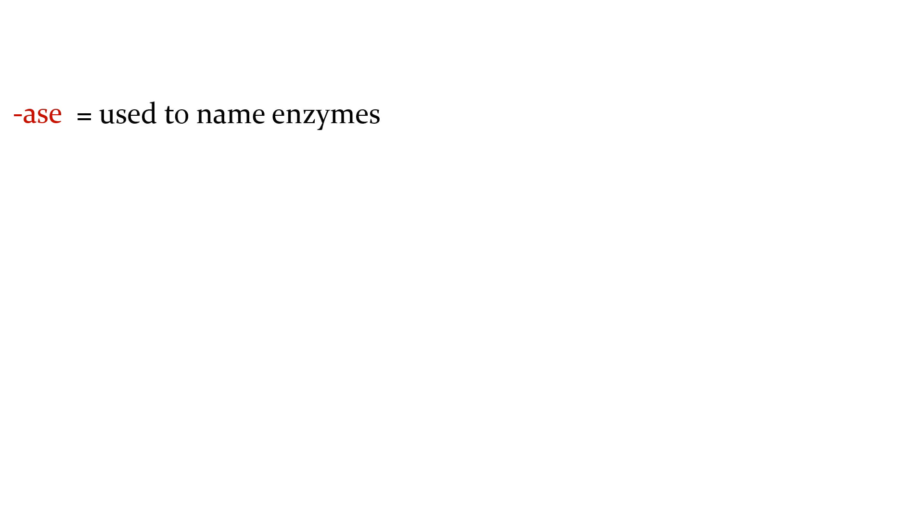Our next one is -ase, and this is used to name enzymes. This is a Greek suffix. We have lactase, maltase, lipase, amylase. The a at the beginning of amylase just means not. Here's a look at one of them in Greek: lipase. You can see the Greek in the English, there's os e and there's os e, lifting it right from the Greek.